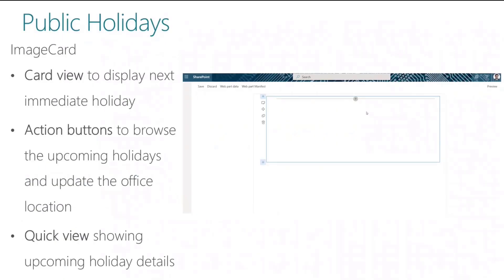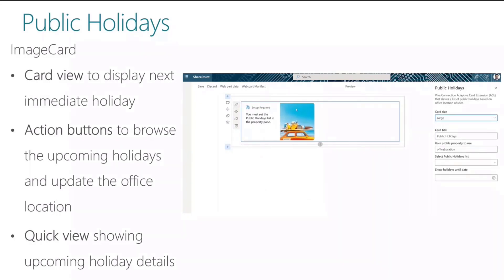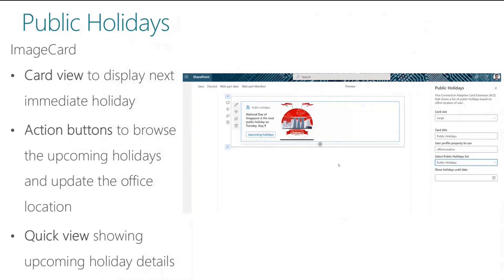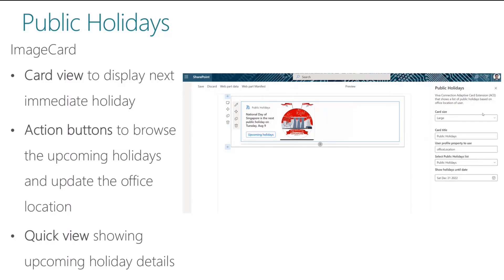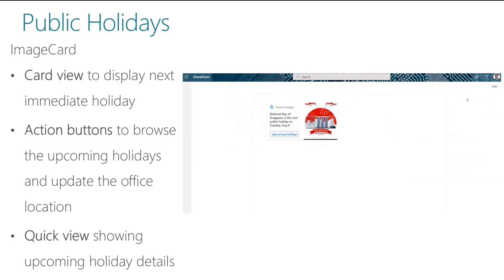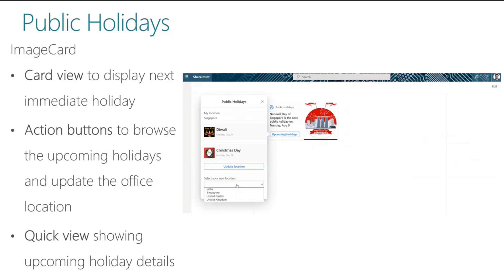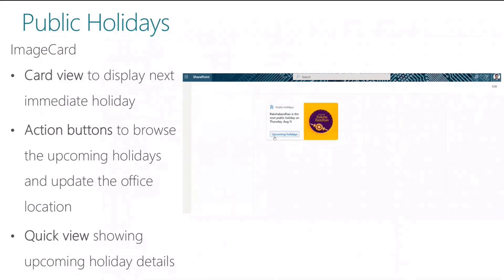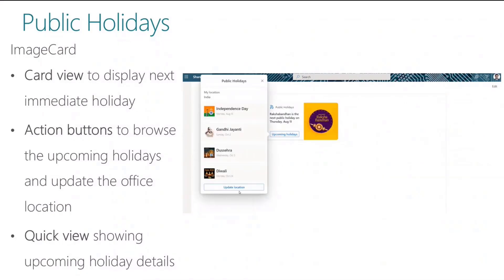For this public holidays solution, we built it using an ACE component type in SharePoint Framework, which enables developers to build rich experiences for the Viva Connections dashboard as well as SharePoint pages. When creating a solution, you have choices to create the card with a basic card template, image card template, or a primary text template, each with different capabilities to render content. This particular solution is developed with the image card template because it manages the primary text, title, and image configuration better for displaying holidays.